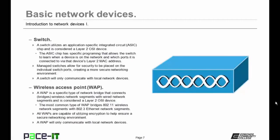Then there is the wireless access point, or the WAP. A WAP is a specific type of network bridge that connects or bridges a wireless network segment with a wired network segment, and it is also considered a Layer 2 OSI device. The most common type of WAP bridges an 802.11 wireless network with an 802.3 Ethernet network segment. All wireless access points are capable of utilizing encryption to help ensure a secure networking environment, and you should ensure that all of your WAPs have encryption enabled. A WAP will also only communicate with local network devices, unless of course it's a wireless router.